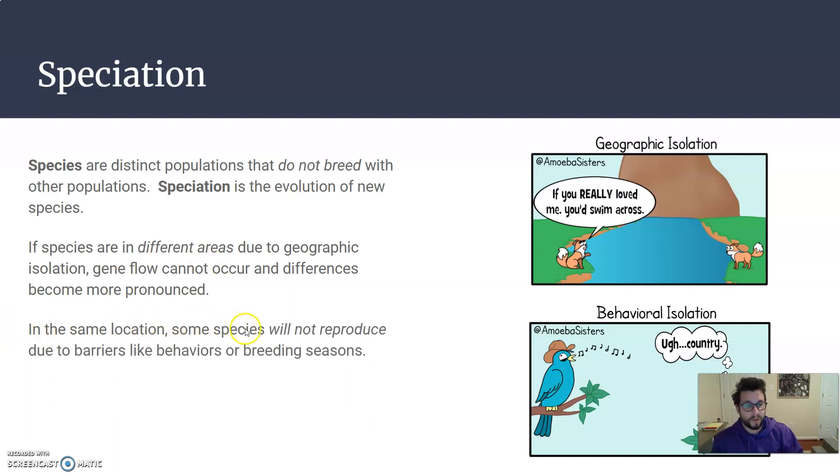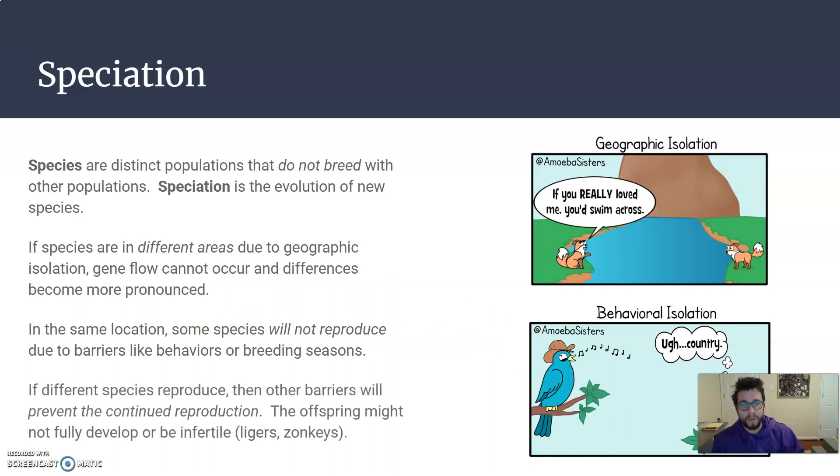Even if they're in the same location, they might have different songs, different behaviors that mean that make them not want to breed with each other. But if they end up breeding with each other, and these offspring still don't continue reproduction, for instance, if the baby doesn't fully develop, if the adult that you've reproduced is not able to have children, like a liger or a zonkey, these would be considered different species.